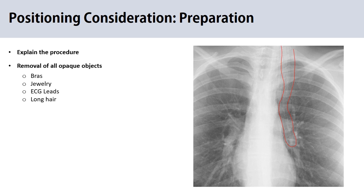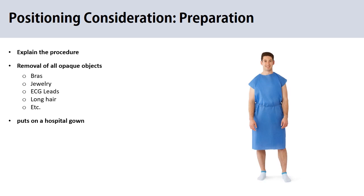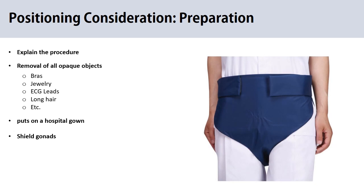Kindly ask the patient to pin up or drop the hair across the shoulder to avoid superimposition. To ensure all opaque objects are removed, the usual procedure is to ask the patient to remove all clothing and then put on a hospital gown. Then place a lead shield between the tube and the patient's pelvis to avoid unwanted dose to the gonads.